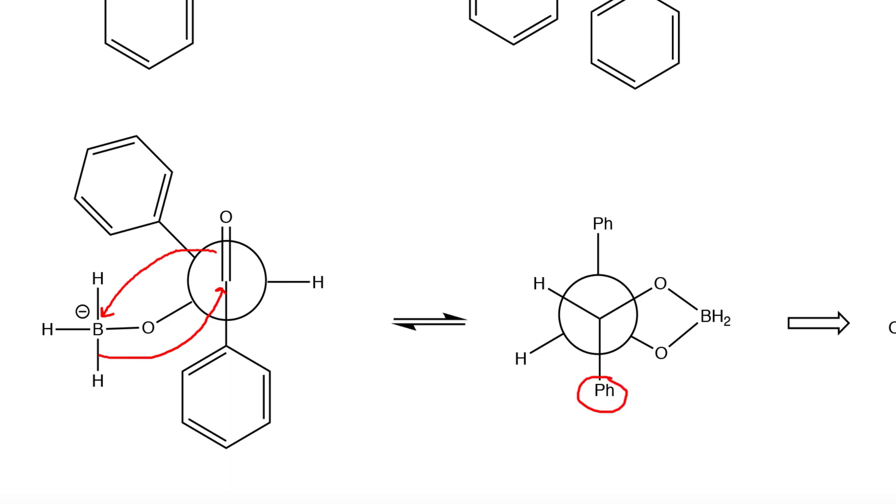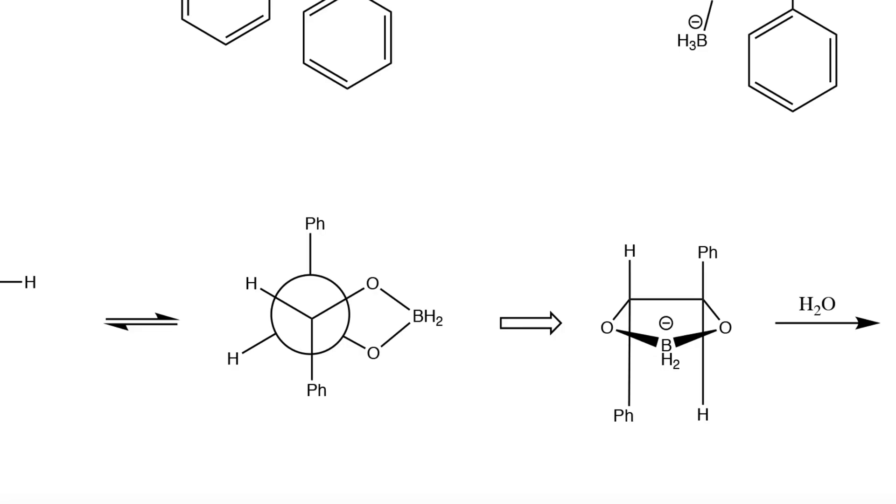And as you can see now, the phenyl groups are now opposite one another. Sometimes it's a bit difficult to visualize what the molecule looks like in this Newman projection. So what I've gone ahead and done here is converted the Newman projection into a Haworth projection.